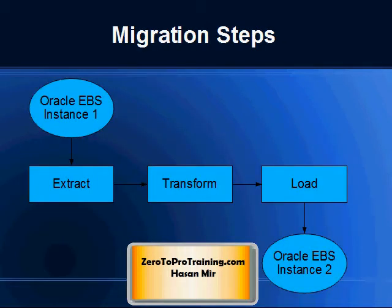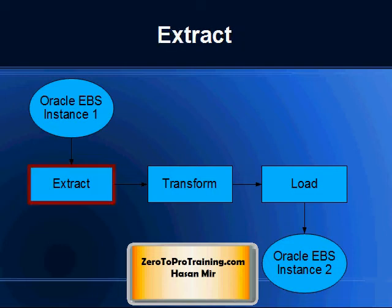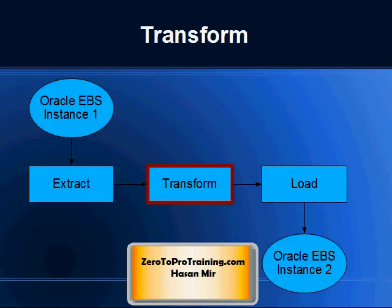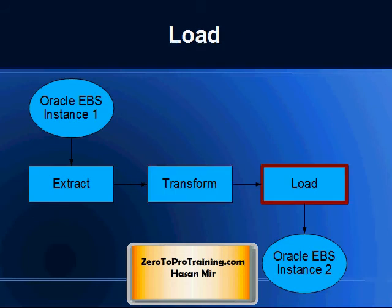The steps involved in migration of data are: extract data from an Oracle eBusiness Suite instance; modify attributes of the extracted data objects as per your requirements — this optional step is called transformation; and load data to the target Oracle eBusiness Suite instance.